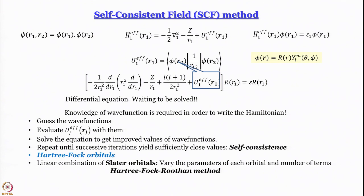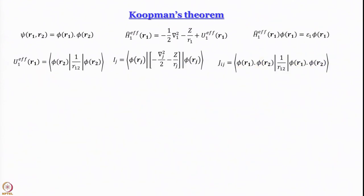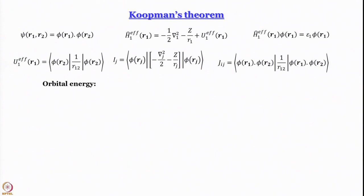This approach is called the Hartree-Fock-Roothaan method, which we may mention in the next class. Now we focus on epsilon 1: it looks like an energy, and it appears as an eigenvalue of a one-electron Schrödinger-like equation. Is it the energy of the atom, the energy of the orbital, or something else? Its expectation value is called the orbital energy.